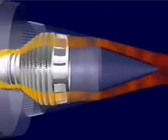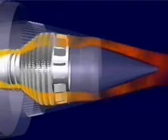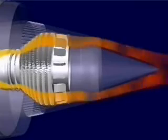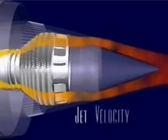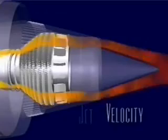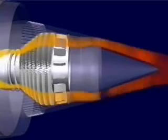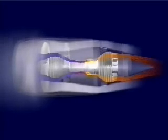Finally, the combusted air races out through the exhaust nozzle at the back of the engine to be accelerated one last time. The speed at which this gas exits the nozzle is called jet velocity. This exhaust stream produces only 20% of the engine's total thrust. The remaining 80% is produced by the large volume of accelerated bypass air exiting the fan duct.